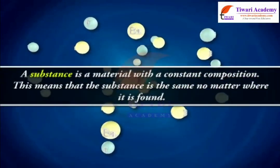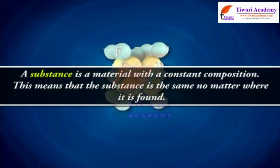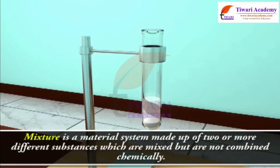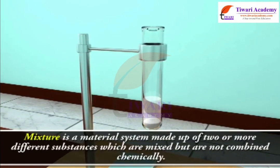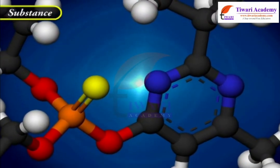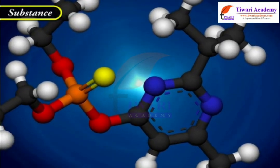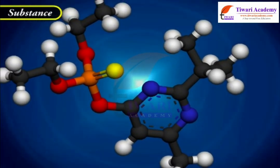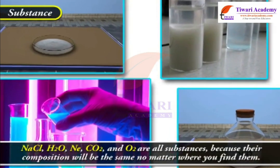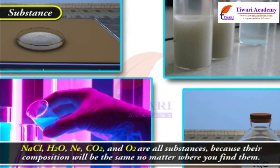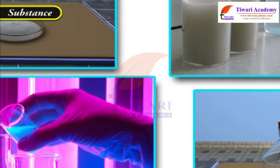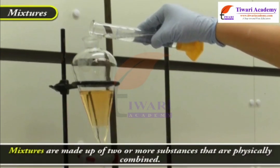Dear students, a substance is a material with a definite chemical composition. In chemistry, a mixture is a material system made up of two or more different substances which are mixed but not combined chemically. A substance has a constant composition — the same no matter where it is found. NaCl, H2O, Ne, CO2, and O2 are all substances because their composition will be the same no matter where you find them. All elements and all compounds are defined as substances.